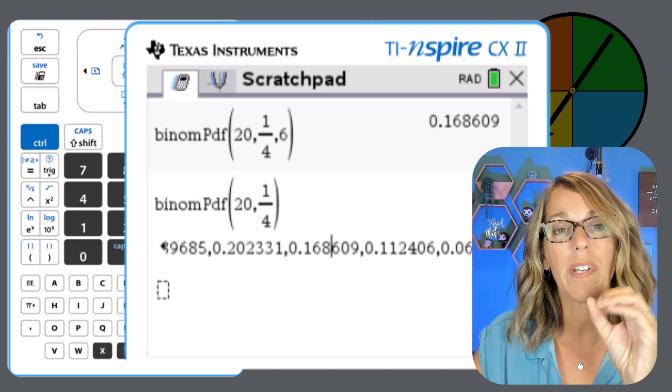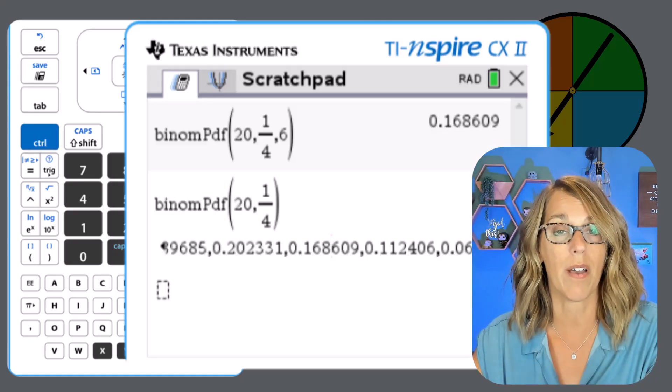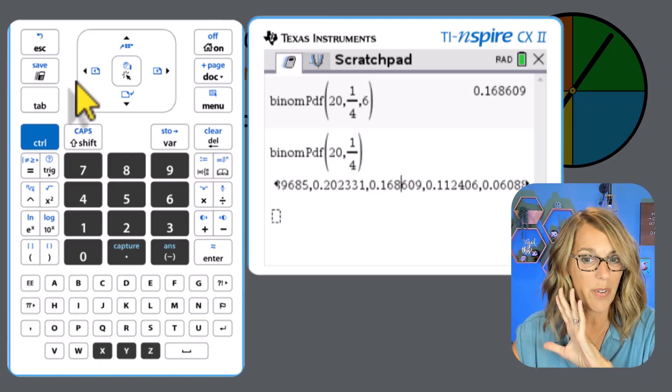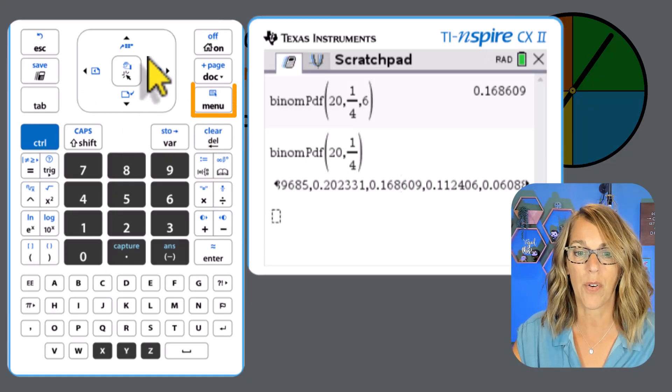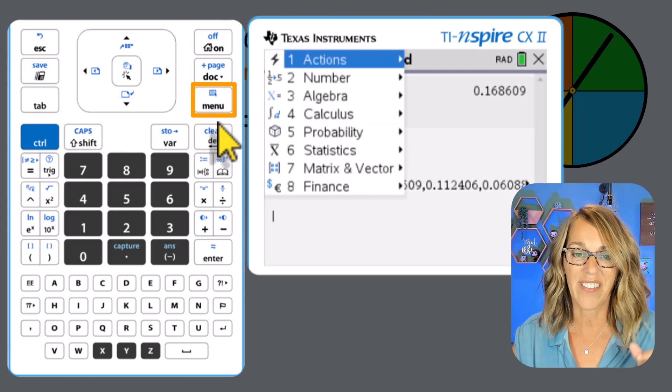So instead, we're going to do the binomial CDF, C for cumulative or a group of possible successes. So to do the CDF, we're going to go to exactly the same place that we were before. So let me arrow down. I'm in an empty spot there, I'm going to go to menu and then statistics.